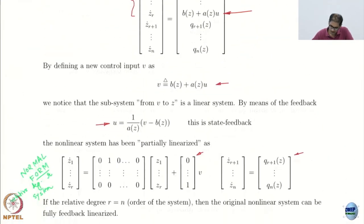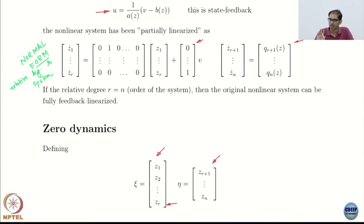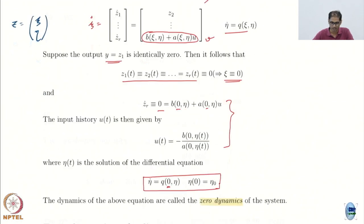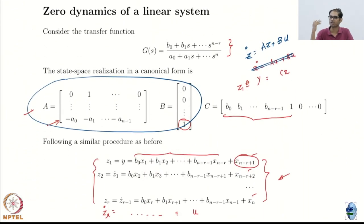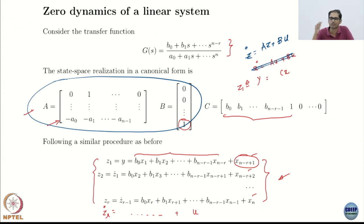Feedback linearization is relatively powerful. You are doing a state transformation — it almost looks like some bunch of magic incantations. I did some LgH, LfH, LgLfH, LfLgH, and so on and forth, and I reach some nicer-looking system.